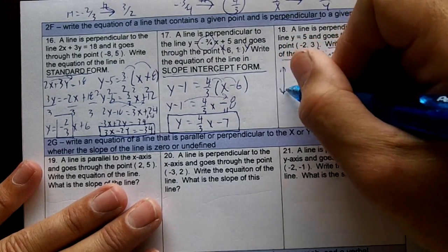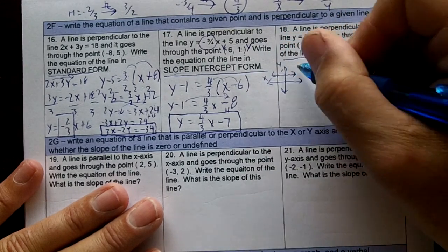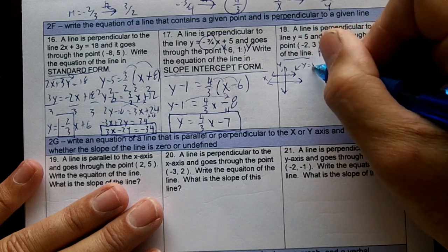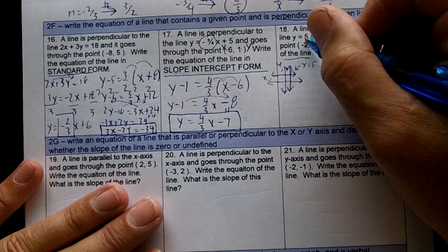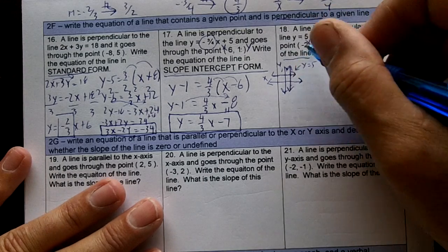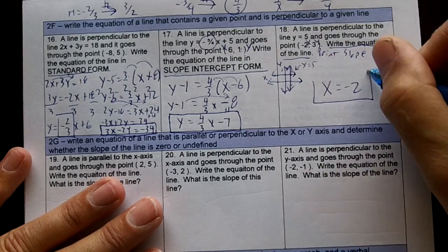Y equal 5. If I were to draw my xy axis, y equal 5 would look like this. If it's perpendicular to it, it's going to go up and down. So this is my x, this is my y, it's going to cross the x axis at negative 2. So the answer is x equal negative 2.